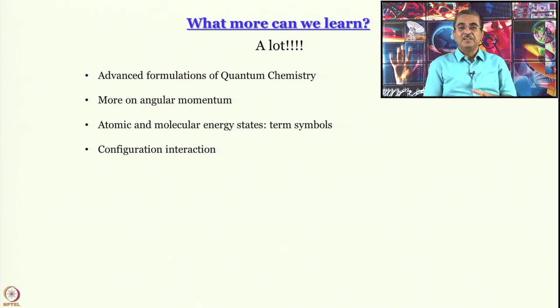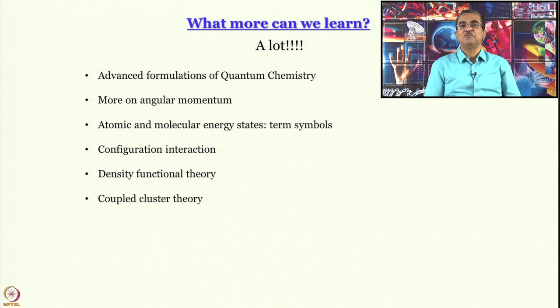One thing that we did not get time to do is term symbols for atomic and molecular energy states. Well, usually this is discussed in inorganic chemistry courses, but I would have loved to discuss it in this course as well. I hope that many of you would have got exposed to it from your inorganic chemistry courses. Next, configuration interaction. We have so far pretended as if a configuration is a state. Actually, configurations also interact. So it is more complex than what we might have seemed to have told you. So configuration interaction and further interactions is something that is to be learned, and that takes us to the realm of density functional theory, which is by far the most popular computational chemistry theory that is used - DFT. And coupled cluster theory is another approach to the same problem. So these are advanced topics in quantum chemistry.